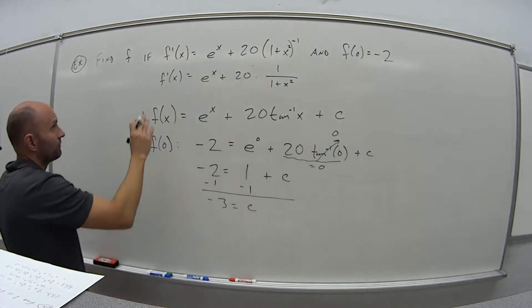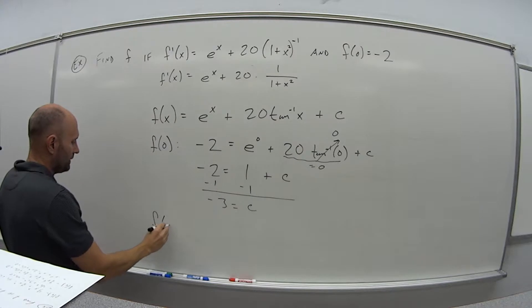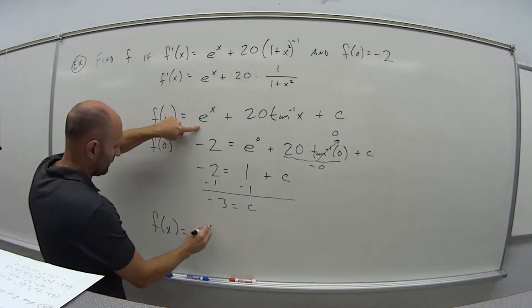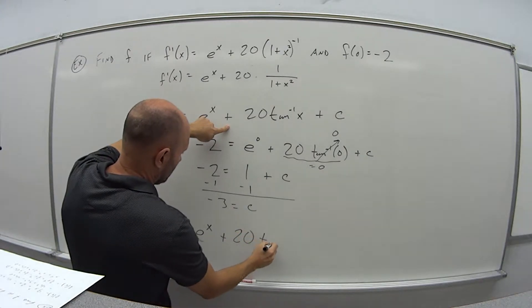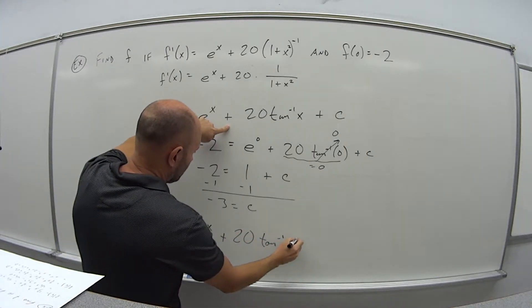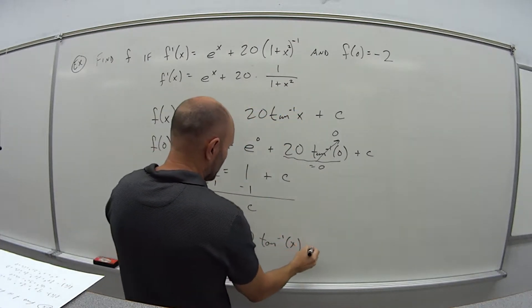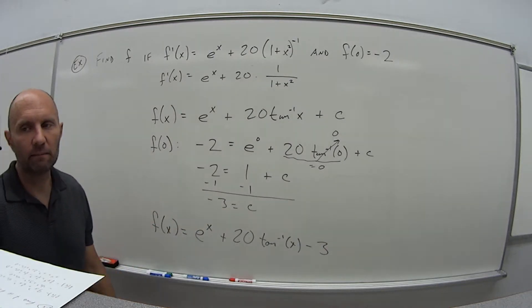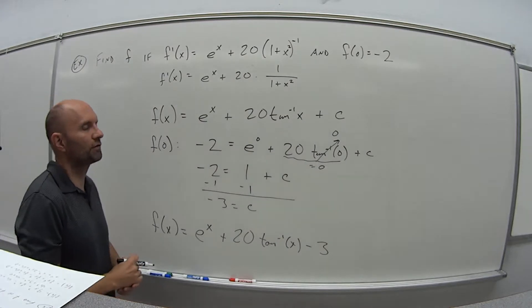Solve for c. So subtract 1 from both sides. You get negative 3 is equal to c. So the function f, if that's its derivative and f of 0 is minus 2, means that f of x is equal to e to the x plus 20 tangent inverse of x plus, or in this case, minus 3. Because c is negative 3, so minus 3.